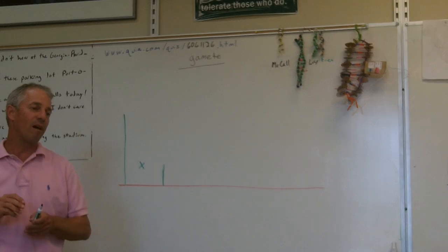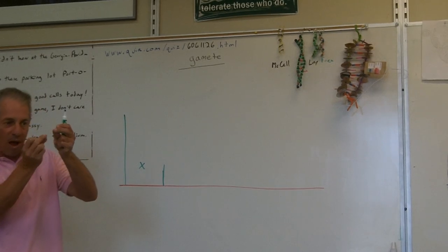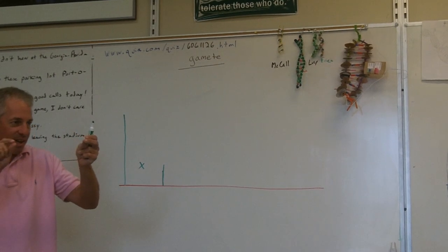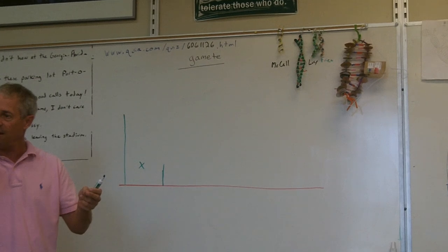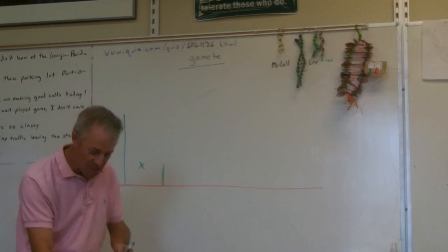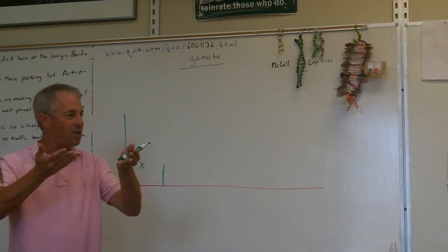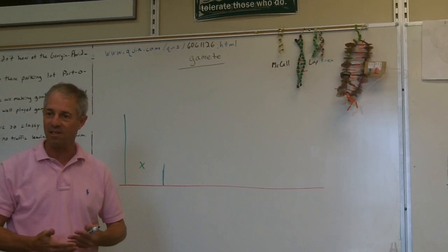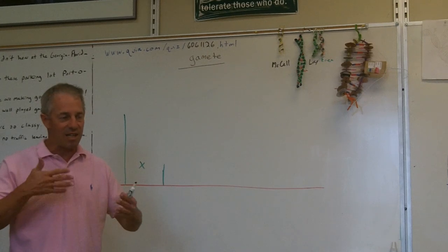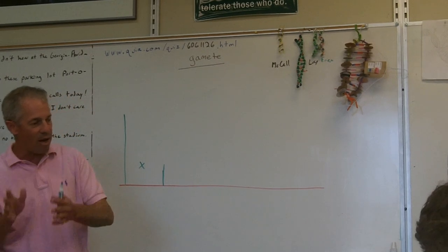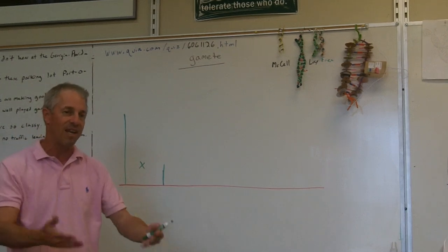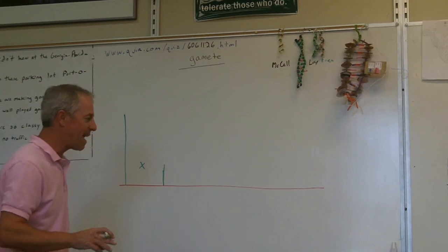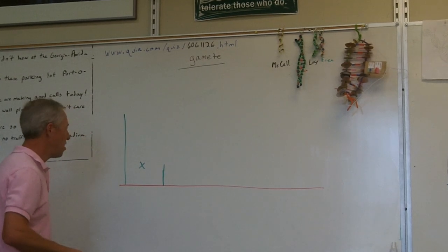A little pea pod would grow from the flower with a bunch of peas in it. The peas are seeds. He would plant those seeds in the ground and grow the next generation, looking at that generation to see how it looked compared to its parents. He did these experiments over about a decade in the early 1800s.